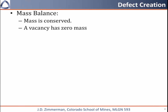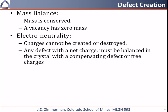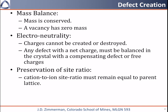We need to talk about how defects are created and what we need to worry about when creating our pictures of them. First, we have to worry about mass balance — mass is always conserved, so we have to pay attention to this when writing equations. Next is electroneutrality — charges can't be created or destroyed. If a defect pulls extra electrons in or gives up electrons, those have to go somewhere else in the crystal. Finally, we have to preserve the site ratio. If we have a ceramic with anions and cations present, we have to keep the site ratio constant when we create defects. Otherwise we will end up making mistakes.